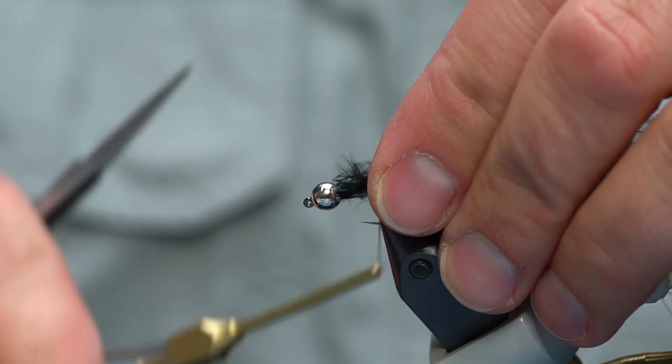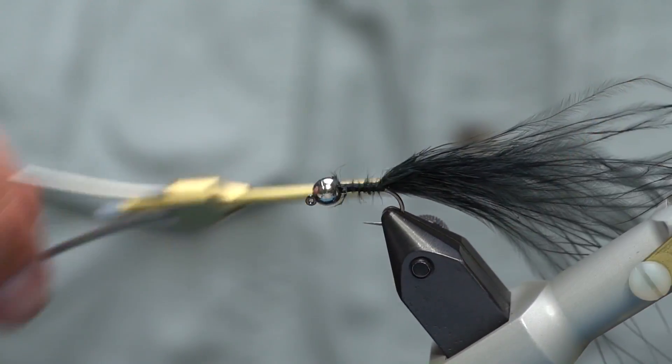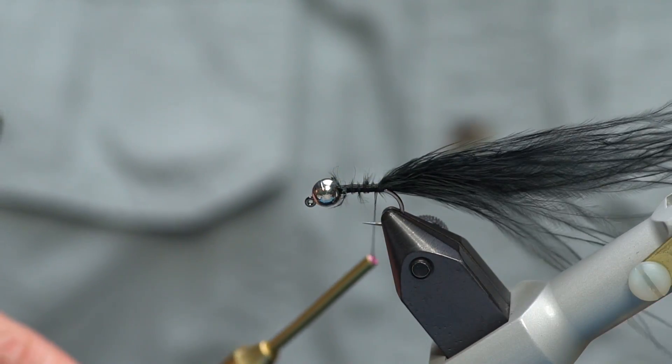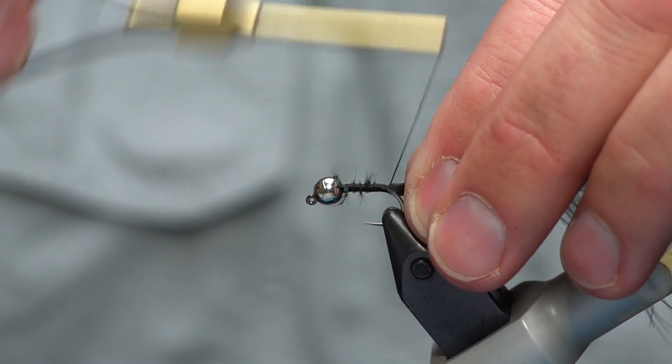I'm going to tie the butts of the feathers in here behind the bead. Just capture them with the hook and then like all these long tailed flies we're going to tie down the bend a little ways to keep it from fouling as much.